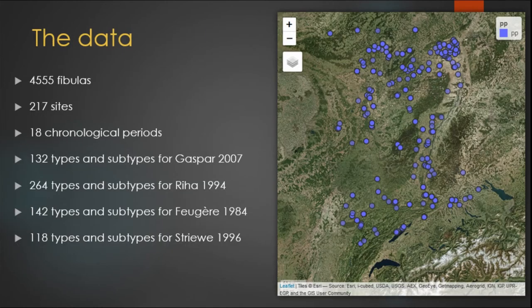The database therefore contains 4555 fibulas distributed over 217 sites and 18 chronological periods. These periods correspond to a half century and a quarter of a century at the turn of the 1st century A.C. These fibulas are defined by 132 types and subtypes for the Caspar typology, 260 for the RIA typology, 142 for the Feuger typology, and 118 for the Striewe typology.